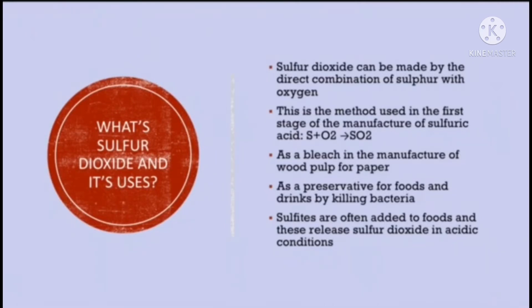Its uses: it is used as a bleach in the manufacture of wood pulp for paper. It is also used as a preservative for foods and drinks by killing bacteria. Sulfites are often added to foods and these release sulfur dioxide in acidic conditions, which again kills bacteria.